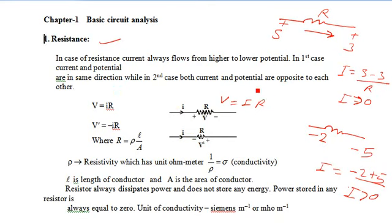In the second case, both current and potential are opposite to each other. Suppose that voltage across this resistance is plus and minus. Then voltage is equal to minus IR, where R is equal to rho L over A.